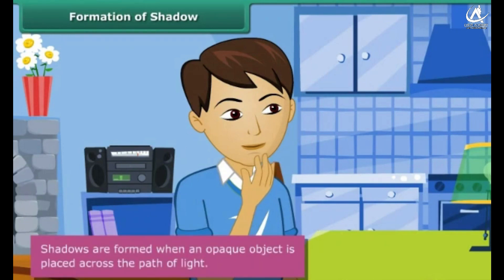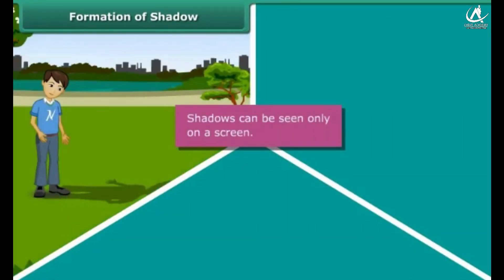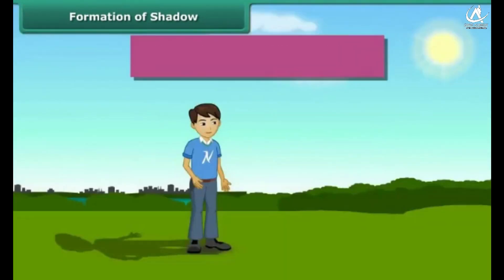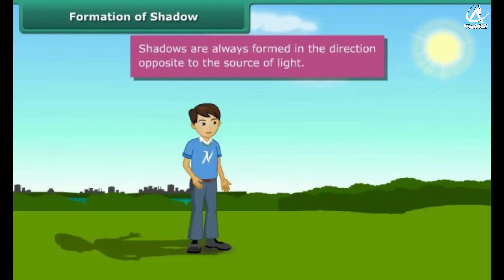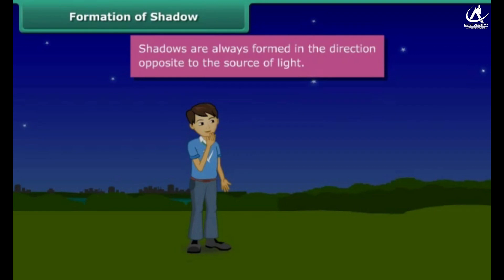Shadows are formed when an opaque object is placed across the path of light. Shadows can be seen only on a screen — the ground, walls of a room, buildings, and other such surfaces act as screens for shadows. Shadows are always formed in the direction opposite to the source of light. In the morning, since you were facing the Sun, the shadow was behind you. In the evening, the Sun was behind you, causing the shadow to form in front of you. When the Sun sets, there was no light, hence there were no shadows.